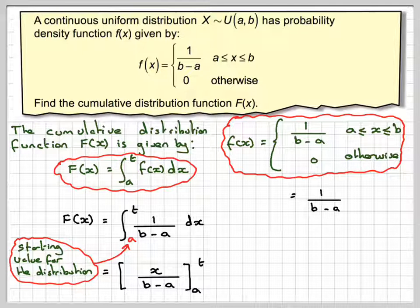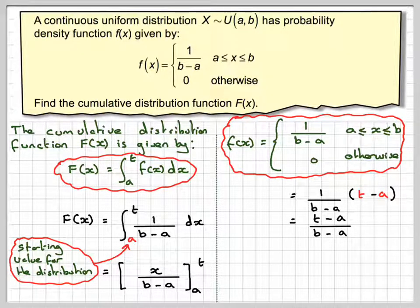Substituting in, we get t over b minus a, minus a over b minus a, and that's going to give me t minus a over b minus a.